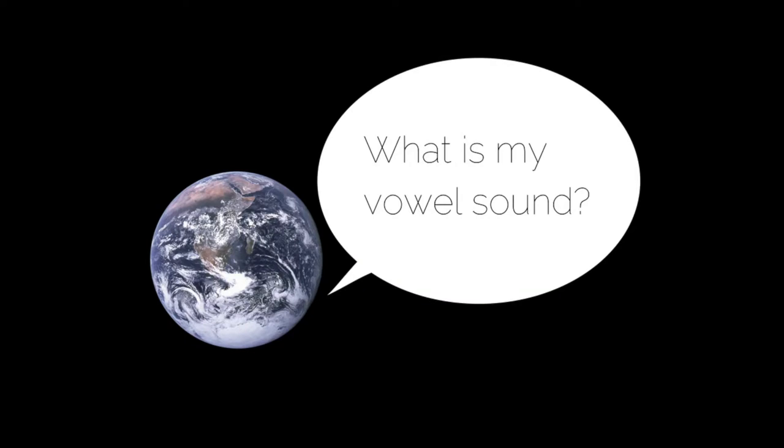Let's start by talking about the vowel sound in the word 'world'. I'm not talking about spelling — forget about spelling. I'm asking you to think about the sound. What is the vowel sound in 'world'? To answer this question, what you need to do is take away the sound at the beginning and take away the sound at the end. What you have left is the vowel sound in the middle. What is that sound?